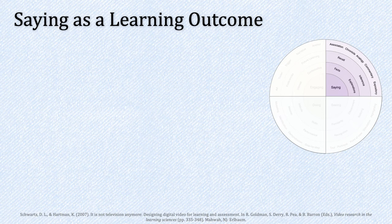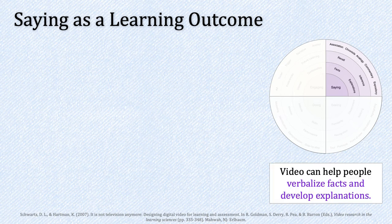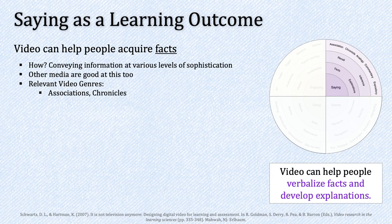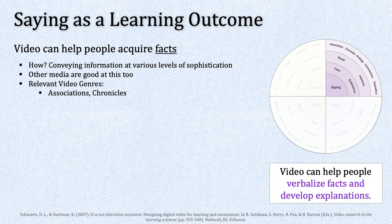The final quadrant focuses on saying as a learning outcome — the idea that video can help people verbalize facts and develop explanations. Video can help people acquire facts by conveying information at various levels of sophistication, though other media are good at this too. Types of video genres used here include associations — the example given is Sesame Street, pairing entertaining images with names to help memorize numbers and letters — as well as chronicles such as news broadcasts and narratives that deliver facts embedded within the context of a larger story.